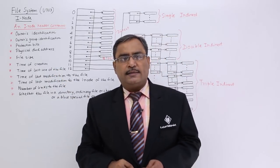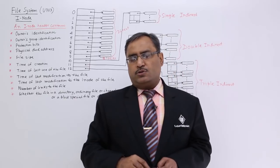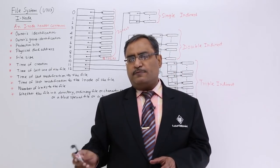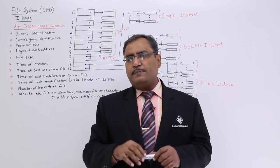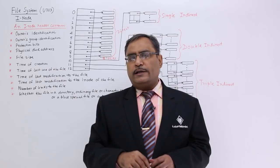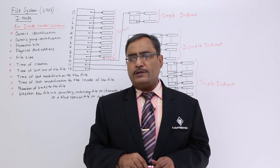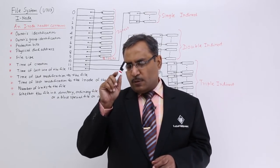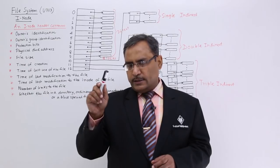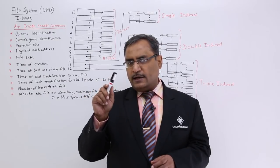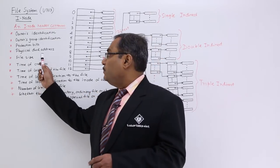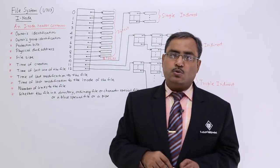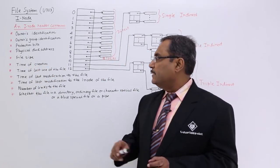The physical disk address to access the file content is also stored. The inode is related to a file which has contents stored in secondary storage. The physical coordinates — track, sector, and cylinder — from which the file exists in secondary storage will be maintained in the physical disk address field to access the content of the file.